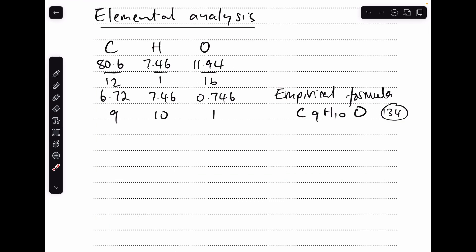We'll start with the elemental analysis — that's obviously going to give us the empirical formula. It's just percentage over relative atomic mass to get the moles, then divide by the smallest to get the ratio. So the empirical formula is C9H10O, and the MR of that is 134.